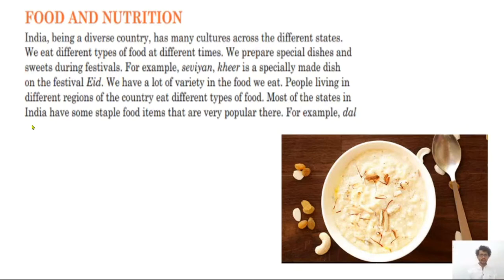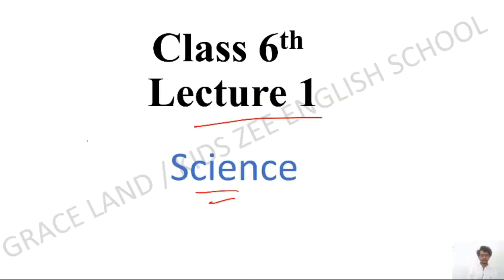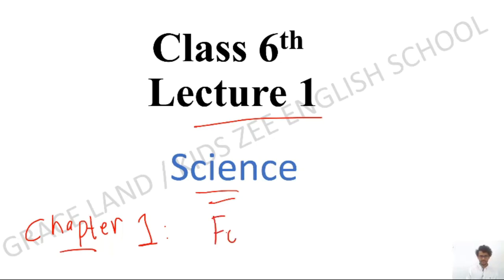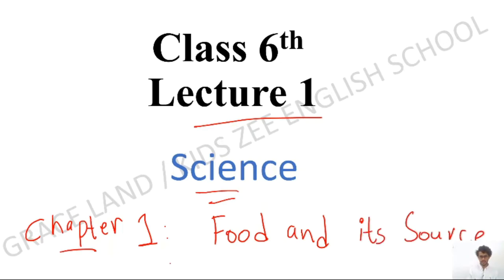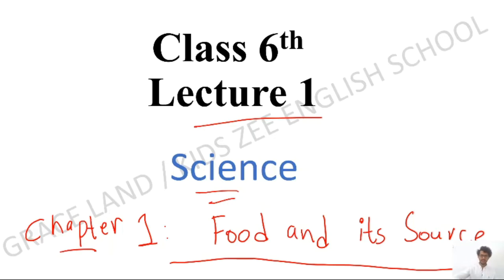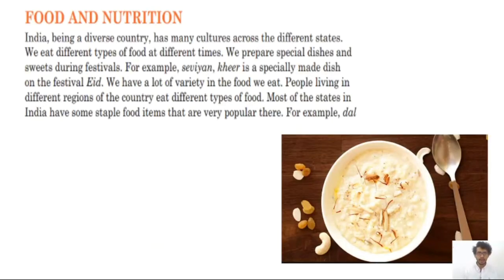Let's open the first chapter. The name of the first chapter is Food and Its Source — Chapter One. I'm going to teach you word by word, reading every sentence carefully, going a bit slow so you can follow along.